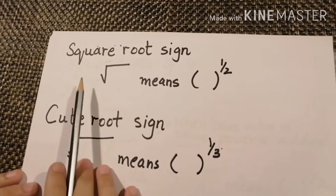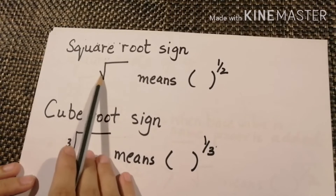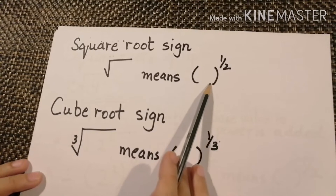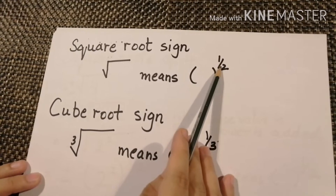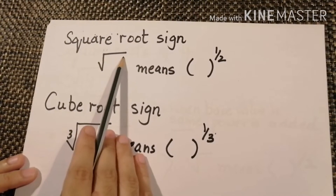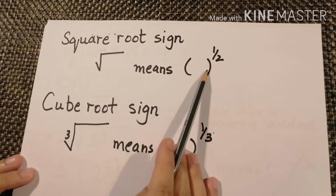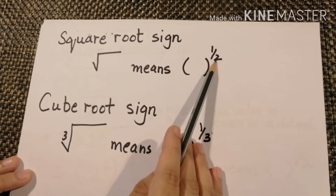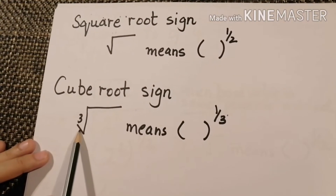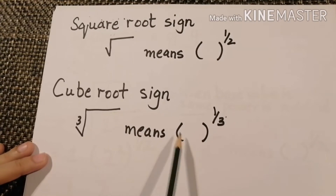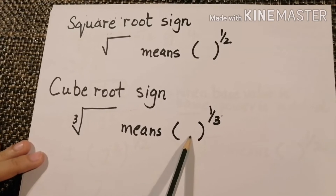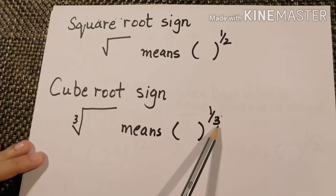Let's start with the square root sign. This sign means any number or variable having the power of 1 by 2. This cube root sign means that the value of the variable or any number has the power of 1 by 3.